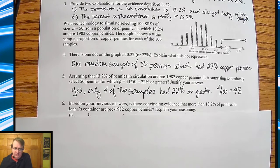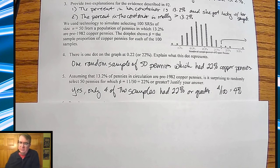So we'd say, yeah. Only 4% of the samples are 22% or greater. So yeah, that's definitely one of those things where it's like, yeah, it's surprising. We wouldn't expect to see that because 4% is less than 5%.